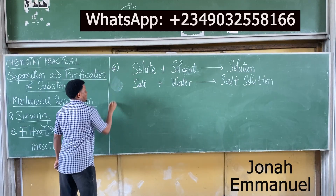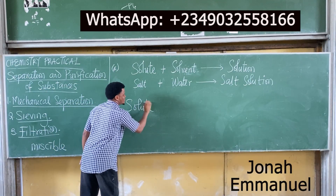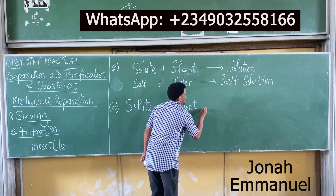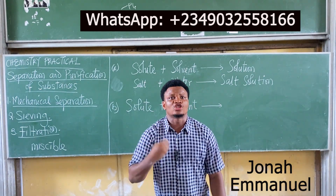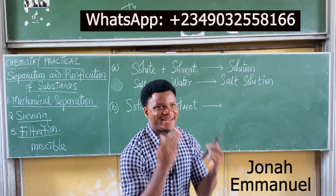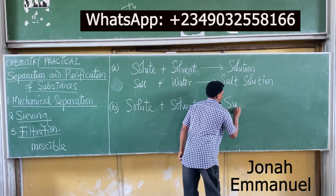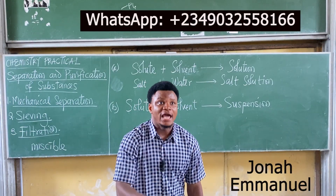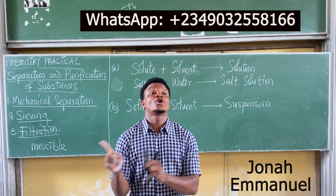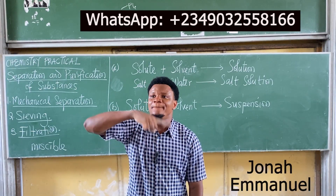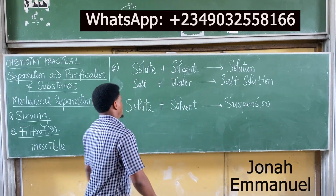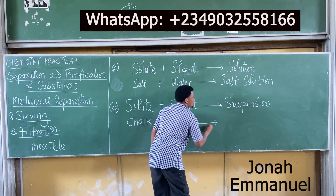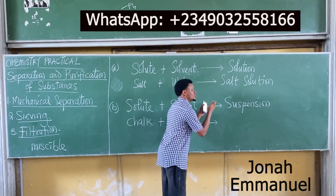Case B: when I have a particular solute plus a solvent, and if I mix them — no matter how much I stir — it does not dissolve completely. I will have what is called a suspension. Example: chalk. No matter how much I grind chalk and put it in water, it will not completely dissolve. You will see particles of chalk. So chalk plus water gives you not a chalk solution, but a chalk suspension.